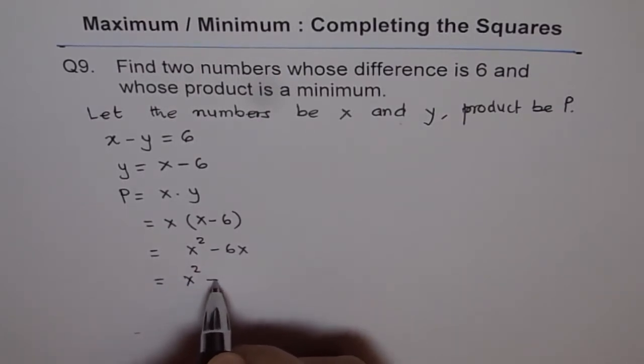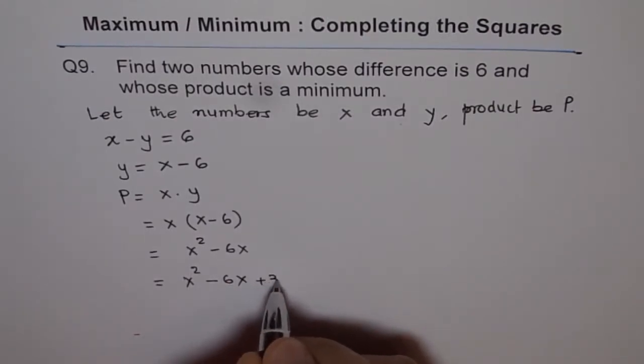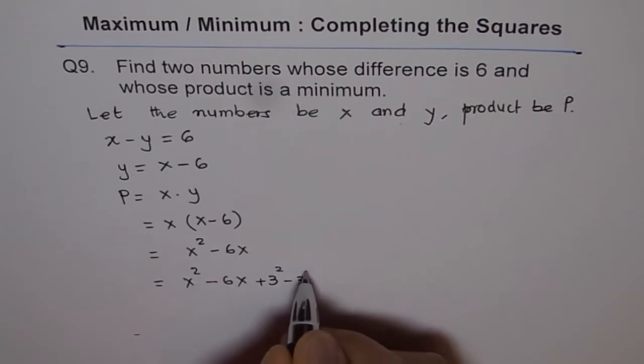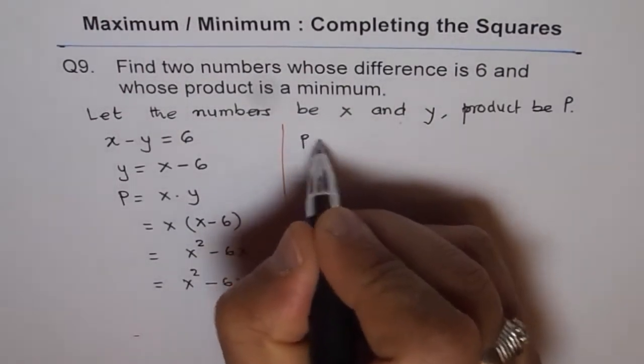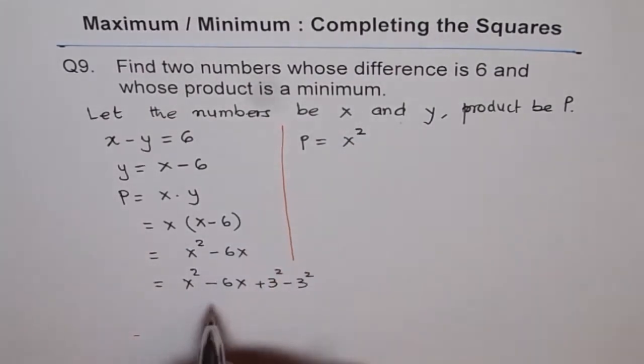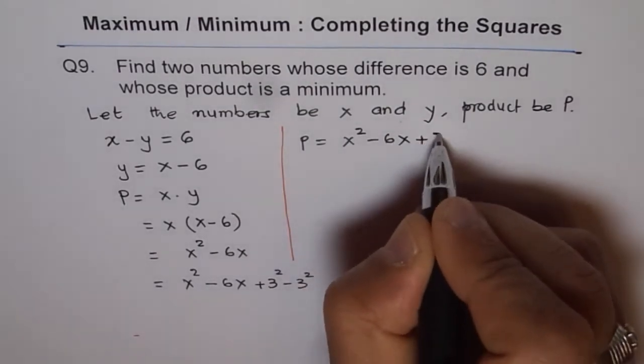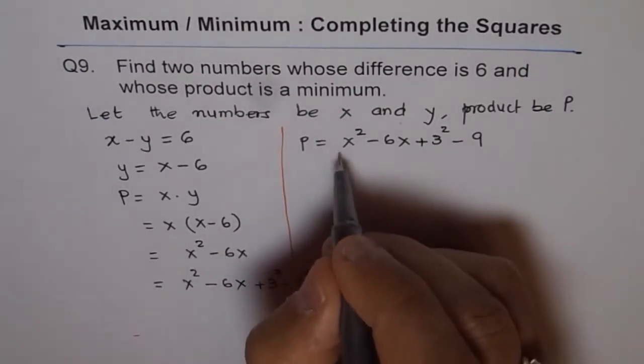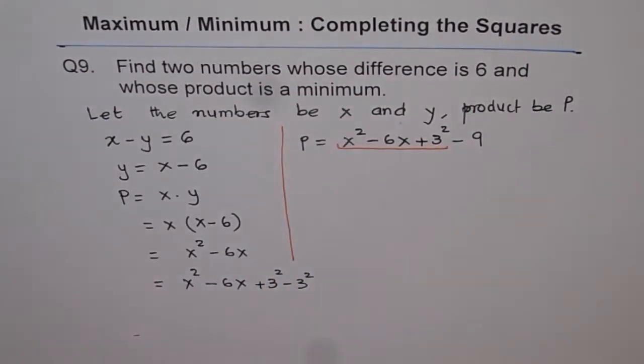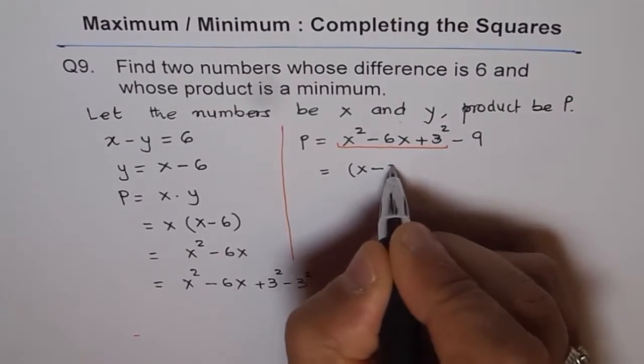We get x squared minus 6x, and what is half of six? Half of six is three, so we'll add and subtract three squared. So that will make a perfect square. This could be written as P equals x squared minus 6x plus three squared minus nine. These first three terms form a perfect square and can be written as (x minus three) whole squared minus nine.